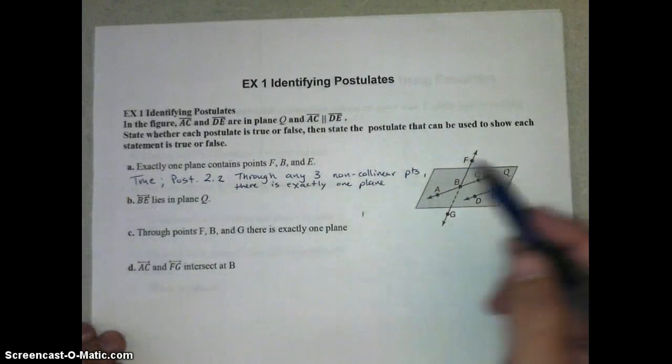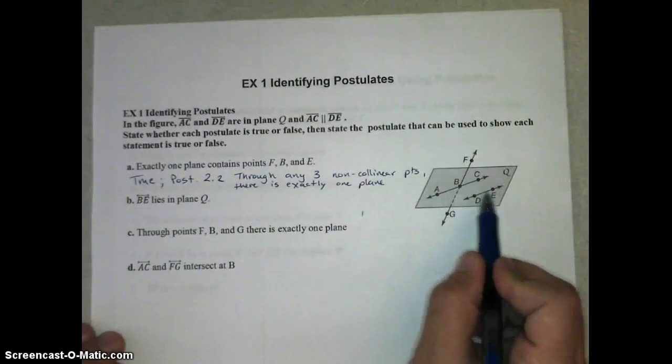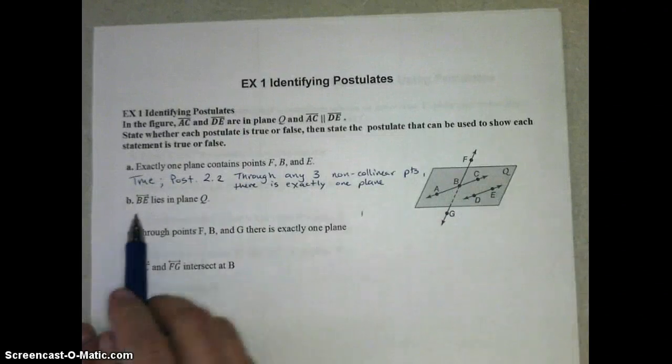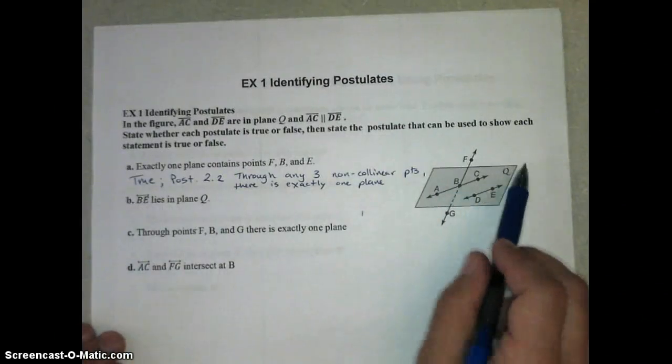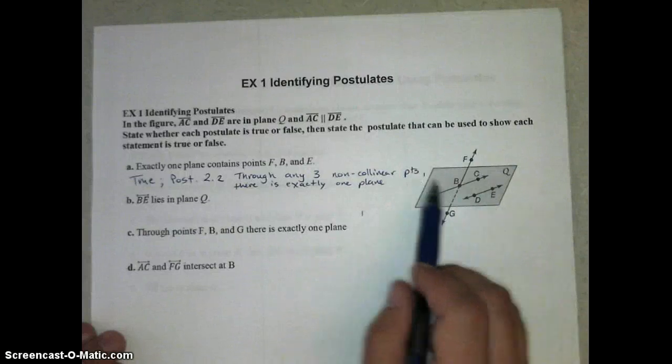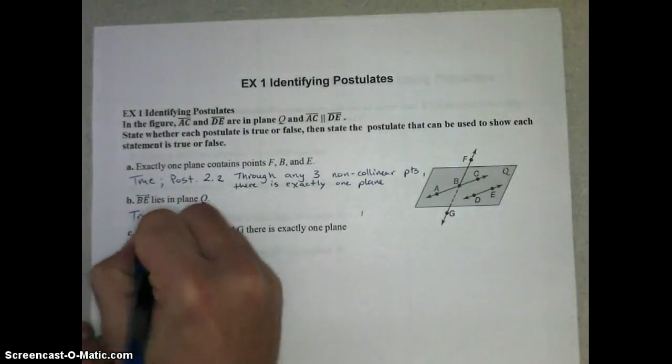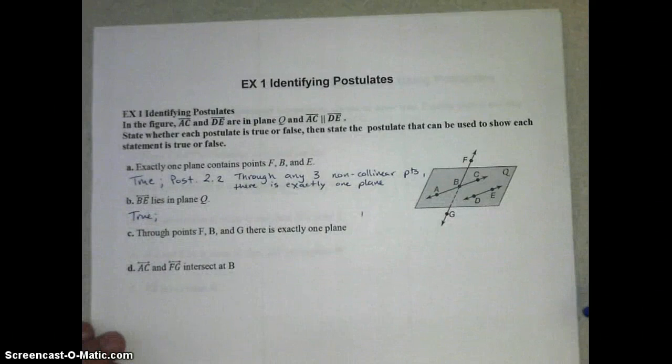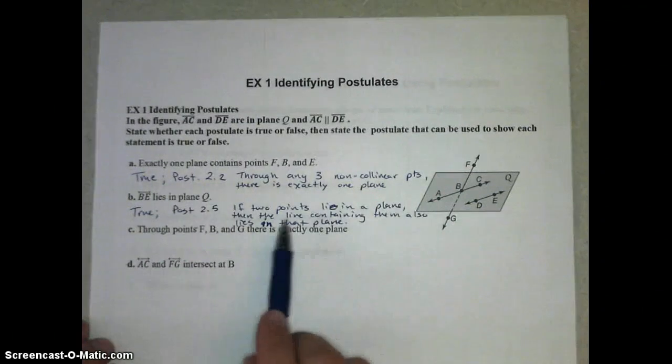Part B, we have line BE, and we're told that BE, even though it's not drawn, if there's two points, we get a line, that line lies on plane Q. Well, since B and E are both in plane Q, the line containing those two points is also on plane Q. So that is true. By postulate 2.5, if two points lie in a plane, then the line containing them also lies in that plane.